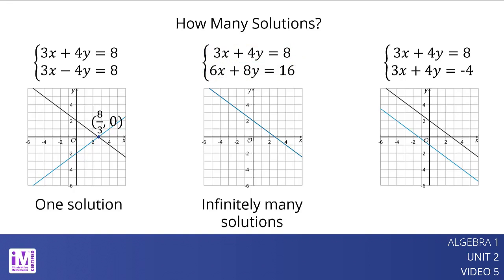The graphs of the equations in this system appear to be parallel. If the lines never intersect, then there is no common point that is a solution to both equations, and the system has no solutions. How can we tell without graphing that this system has no solutions? Notice that in one equation, 3x plus 4y equals 8, but in the other equation, 3x plus 4y equals negative 4. Because it is impossible for the same expression to equal 8 and negative 4, there must not be a pair of x and y values that are simultaneously true for both equations. This tells us that the system has no solutions.